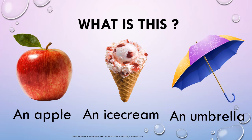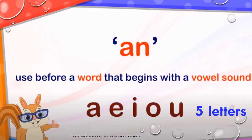Why are we using 'AN' before these words? 'AN' is used before words that begin with a vowel sound. The vowel letters are: A, E, I, O, U. All these five letters are vowel letters.